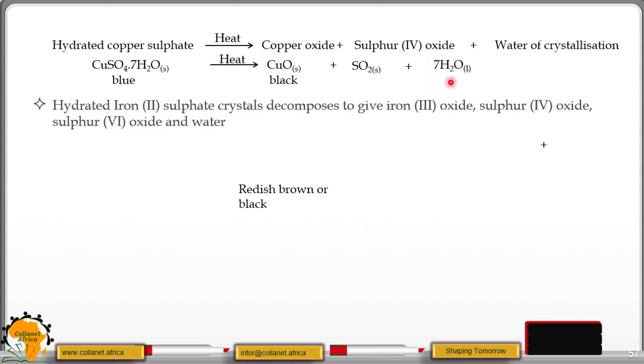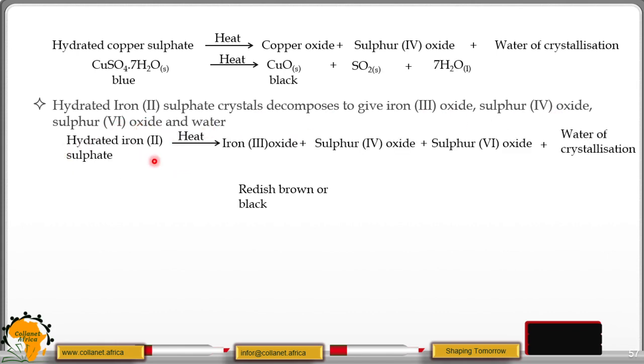Hydrated iron(II) sulfate crystals decompose to give iron(III) oxide, sulfur(IV) oxide, sulfur(VI) oxide, and water. So if you heat the hydrated iron(II) sulfate, you're going to get these four products: iron(III) oxide, sulfur(IV) oxide, sulfur(VI) oxide, and water of crystallization.